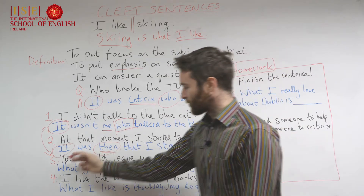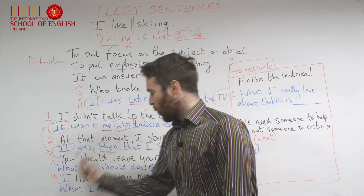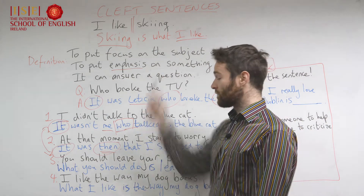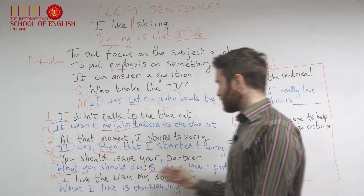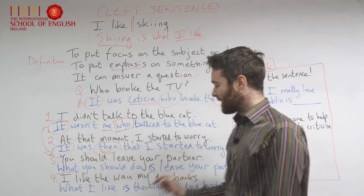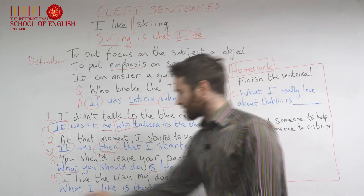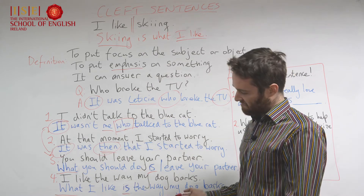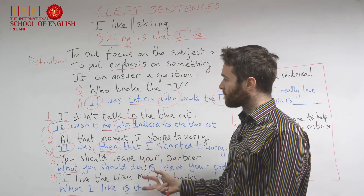Numbers three and four use the 'what' structure. 'You should leave your partner' becomes 'What you should do is leave your partner' — same meaning, just a reconstruction using cleft sentences. The keywords are 'what' and 'is.' Similarly, 'I like the way my dog barks' becomes 'What I like is the way my dog barks.' We've got our 'what,' our 'is,' and we rearrange the sentence.